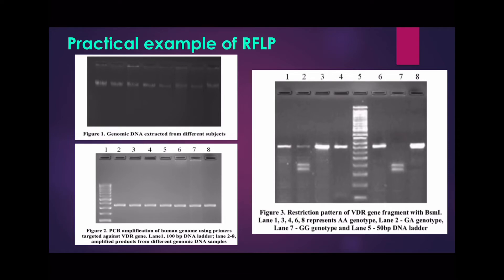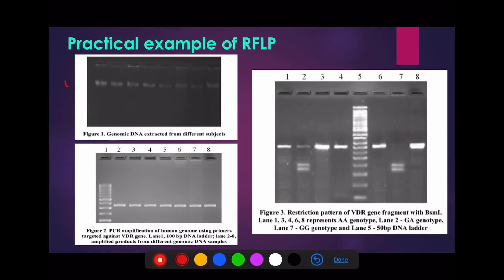Let's look at a practical experiment and interpretation of DNA polymorphism through RFLP. I recently read a paper on vitamin D receptor polymorphism where they used the PCR-RFLP technique. They looked for the BSMI polymorphic sequence of the vitamin D receptor gene. After genomic DNA isolation, they ran gel electrophoresis to confirm the isolation process. In this picture, the isolated DNA is clearly visible. Then, with forward and reverse primers specific for the BSMI polymorphic sequence, they performed PCR and ran another round of gel electrophoresis to confirm the DNA was amplified.